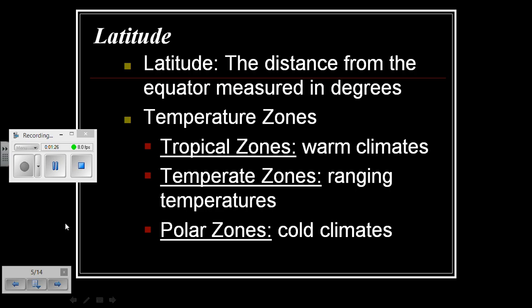Latitude refers to the distance from the equator measured in degrees. If you look at a globe of earth, you notice the equator represents a horizontal line around the earth, and latitude lines follow the same rule. In breaking down these latitude regions, you have various temperature zones: tropical zones refer to warmer climates, temperate zones have ranging temperatures, and polar zones have cold climates.